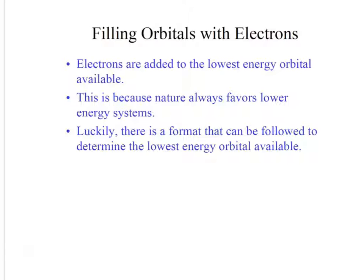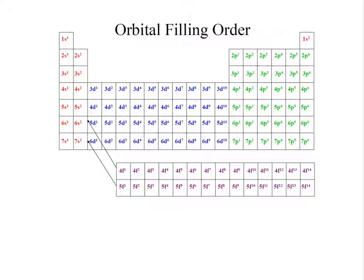Electrons are added to the lowest energy orbital available because nature favors lower energy systems. Here's the filling order. You read it the way you read a book from left to right until you get to the element that you're looking for. An element's electron configuration contains every lower energy orbital and energy level that comes before it. The energy level of the subshell increases as you move across from left to right.